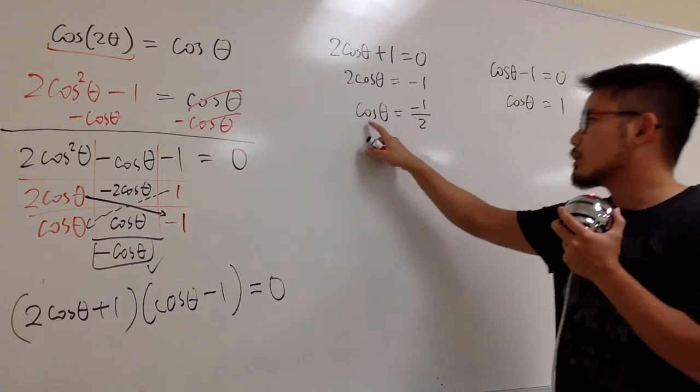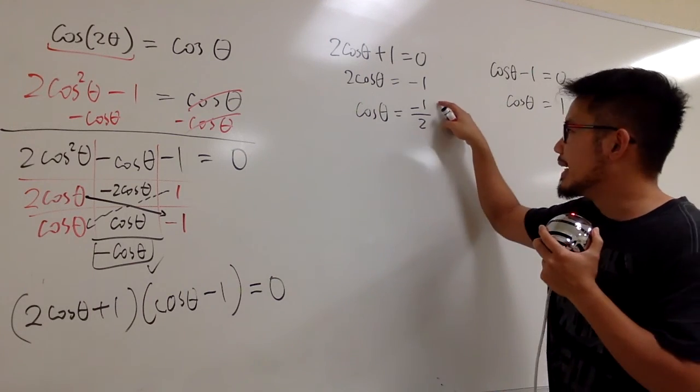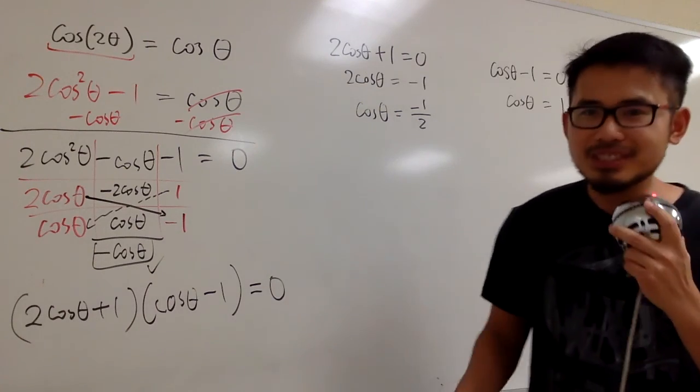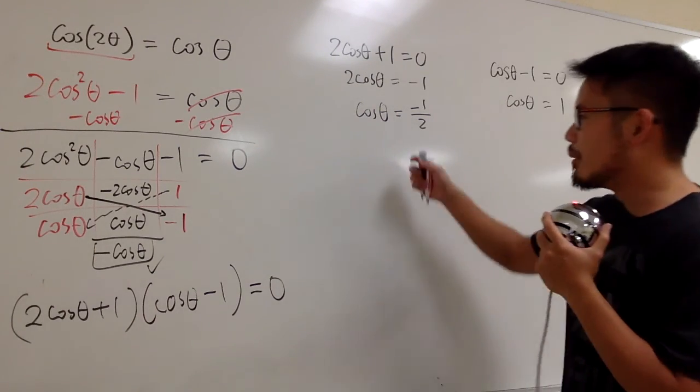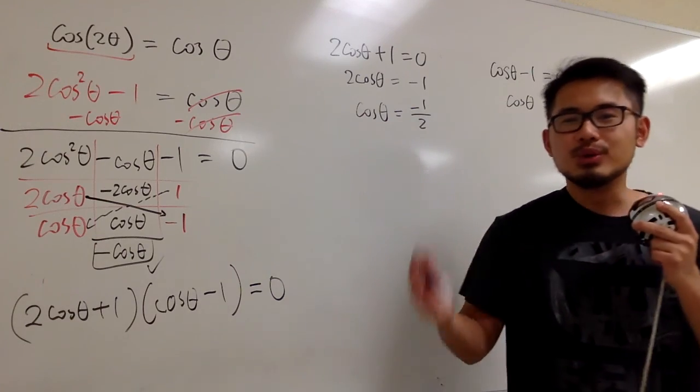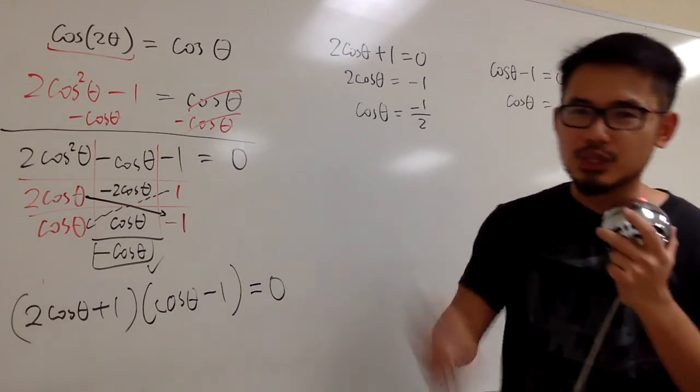And now, what? You have to ask yourself, cosine of what angle will give you negative 1 over 2? And you can choose to remember all the numbers, all the angles on the unit circle. And then, you can tell me, boom, boom, two answers right away.